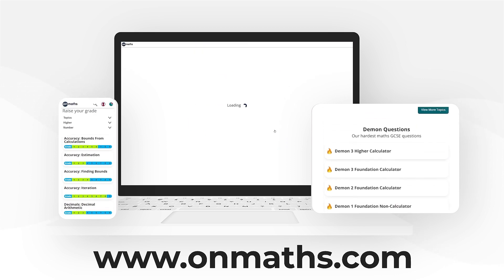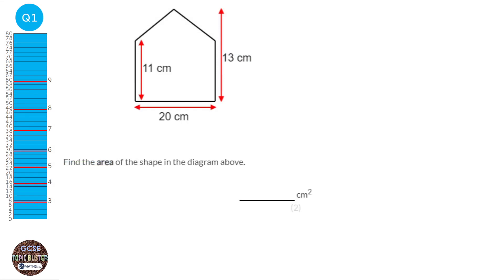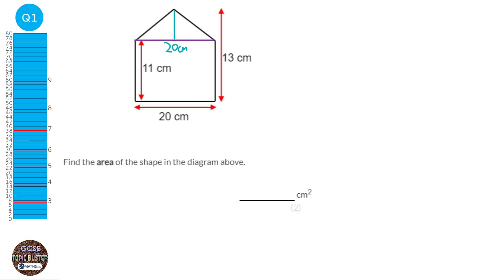To answer this question we need to cut this shape into two shapes. We're going to draw a line across here and cut it into a rectangle and a triangle. We need to first label the parts of the triangle. The base of the triangle will be the same as the base at the bottom, so that will be 20 centimetres. We need to find the height, which is 90 degrees to the base. The total height is 13 and the height of the bit we don't want is 11, so two centimetres will be left over — the height of the triangle is two centimetres.